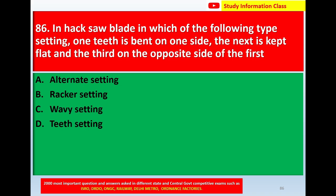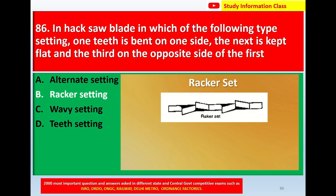Question number 86: In a hacksaw blade, in which of the following type of setting is one tooth bent on one side, the next kept flat, and the third on the opposite side of the first? Option A: alternate setting, option B: raker setting, option C: heavy set, option D: teeth setting. Correct answer is option B: raker setting.